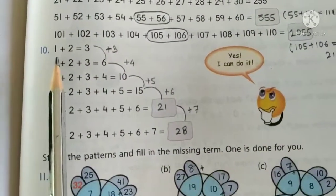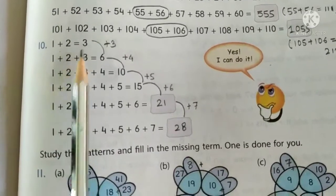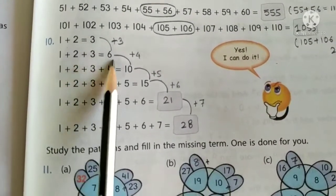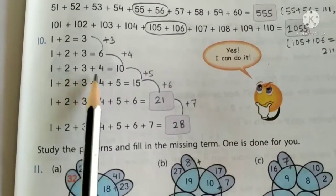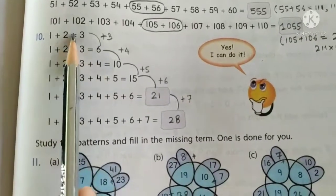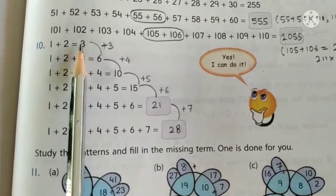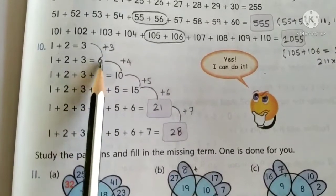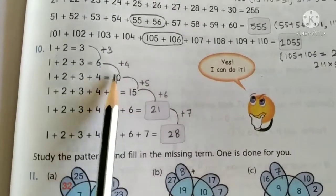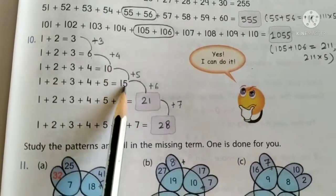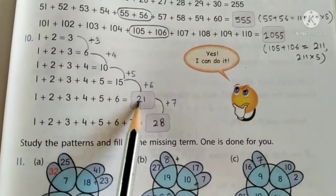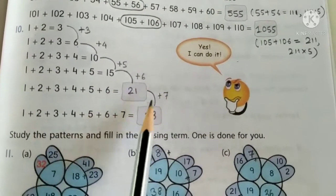Now question number 10. We have 1 plus 2 is 3. 1 plus 2 plus 3 is 6. 1 plus 2 plus 3 plus 4 is 10. Here we have the jumping pattern. 3 plus 3 is 6. 6 plus 4 is 10. 10 plus 5 is 15. 15 plus 6 is 21. 21 plus 7 is 28.